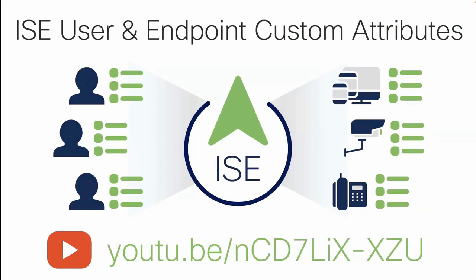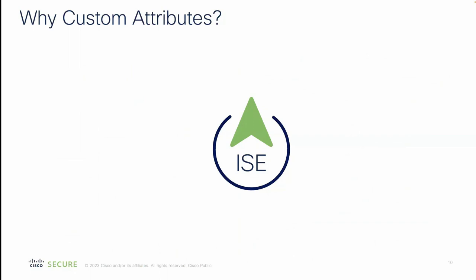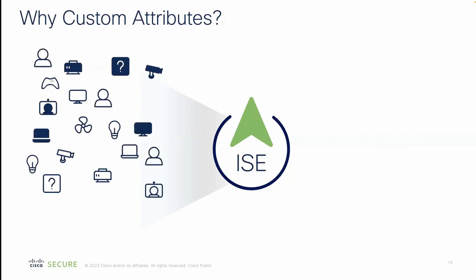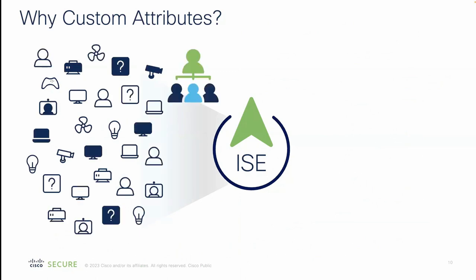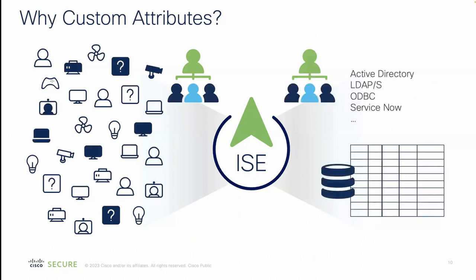We did a previous ICE webinar on ICE user and endpoint custom attributes. ICE has the ability to directly configure custom attributes inside of it - there's a whole hour-long webinar on that. Custom attributes are basically details about all these endpoints you have. I like to think of it as non-networking information - more logical, organizational, political type of information. Many companies have external databases where you keep track of all these different things, and if you were the ICE administrator who had to input each one manually, that would be very tedious work.